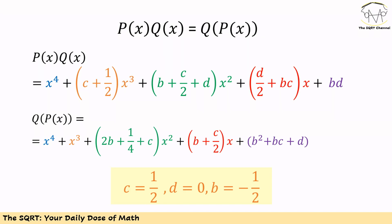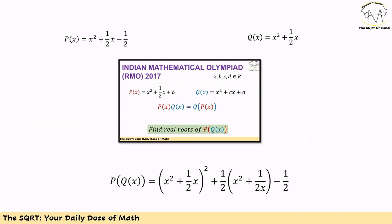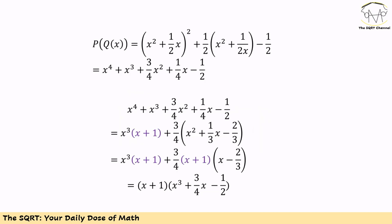Continuing with the other coefficient comparisons, we end up with D = 0 and B = -1/2. With that, P(x) = x² + (1/2)x - 1/2 and Q(x) = x² + (1/2)x. As an alternative idea, you can also take the derivative, and the second derivative, to simplify the expressions and find B, C, and D — it may be easier in some cases.